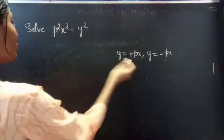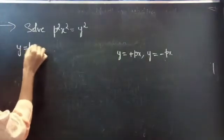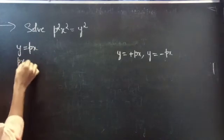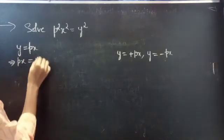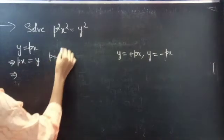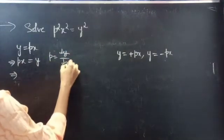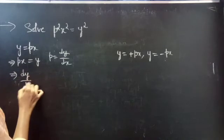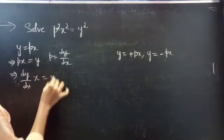Let's consider the first one: y equals to px, or you can write px equals to y. Now, put p equals to dy/dx, so you get dy/dx times x equals to y.